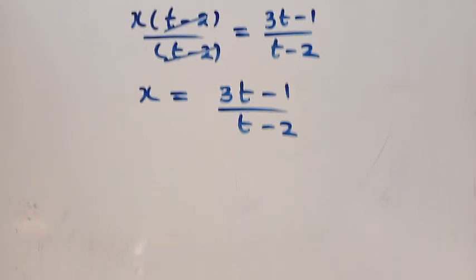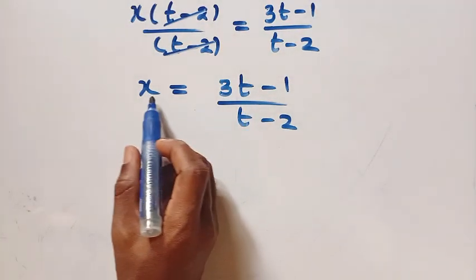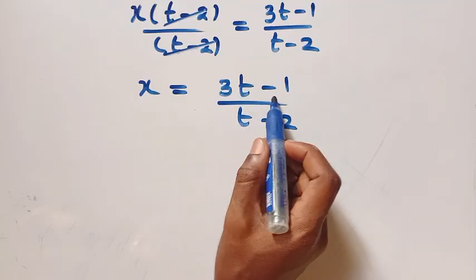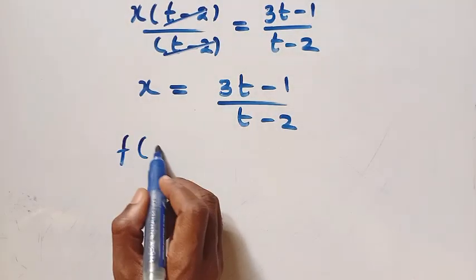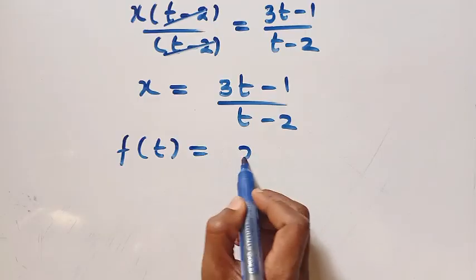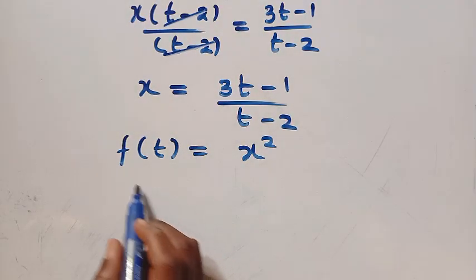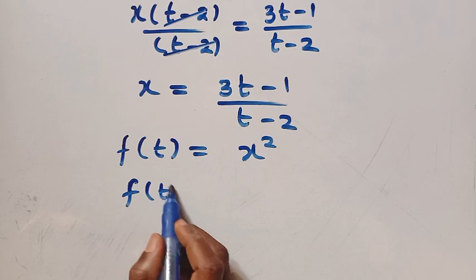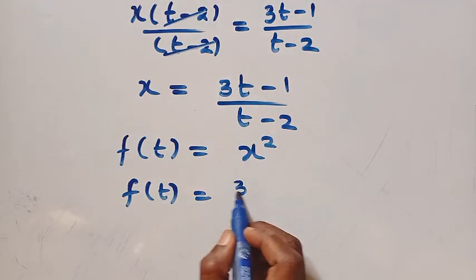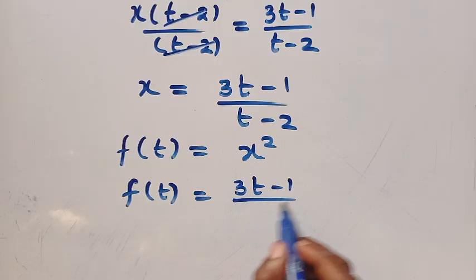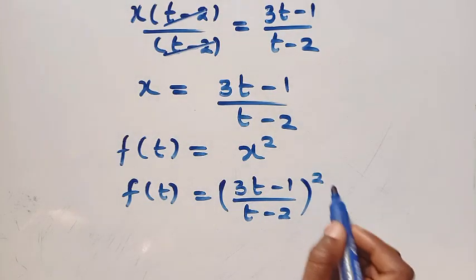So therefore, we are going to replace every single x with (3t minus 1) over (t minus 2). The original equation has f of t equals x squared, which means we need to get the value of x squared. Replacing x with (3t minus 1) over (t minus 2), we have (3t minus 1) over (t minus 2), all raised to the power of 2.